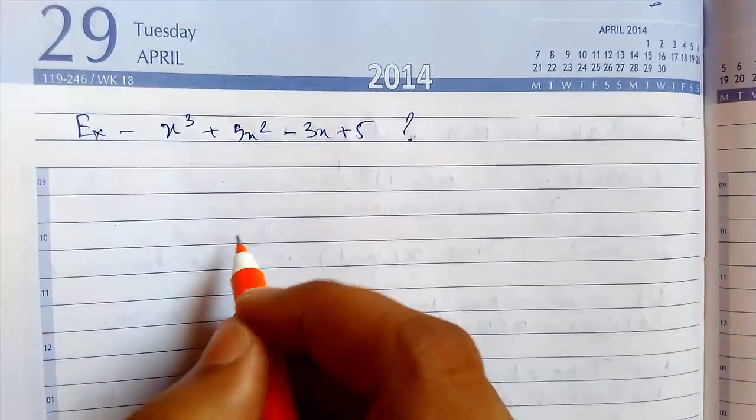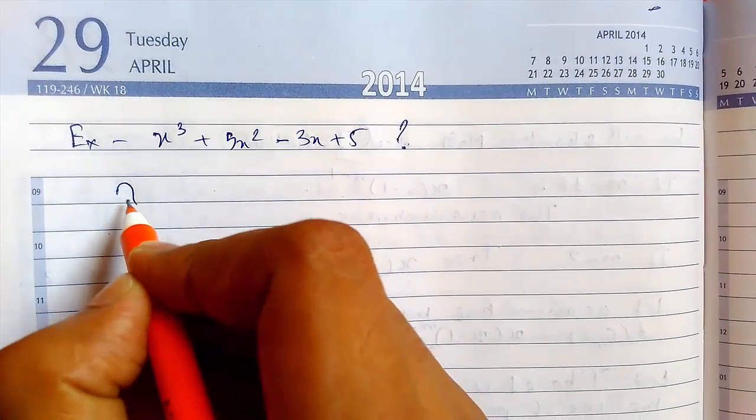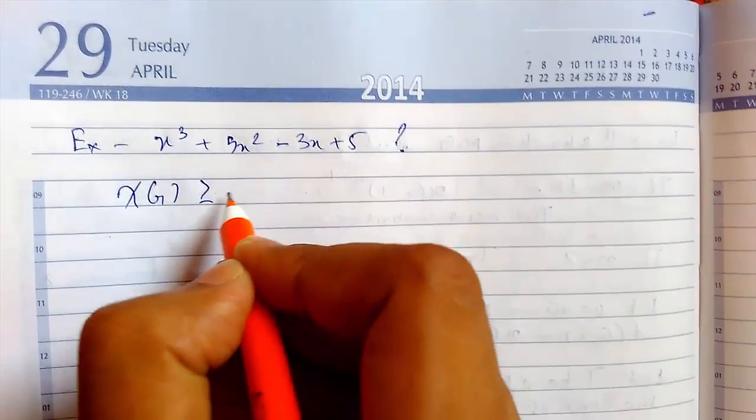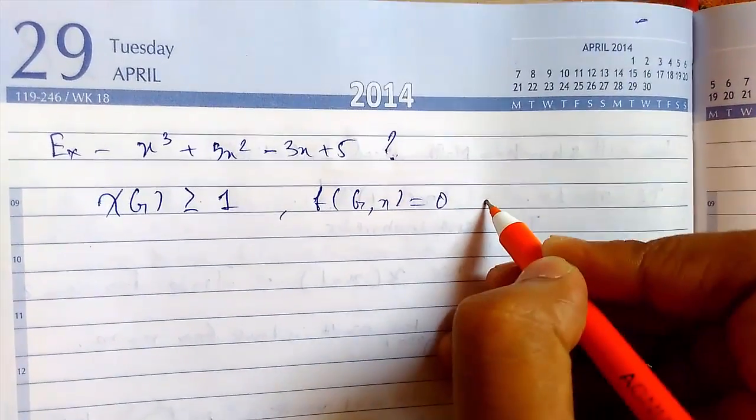So we need to check it is a chromatic polynomial of any graph. We know that chi of g must be greater than 1, so f of g comma x that equals to 0. We know that for at x equals to 0.